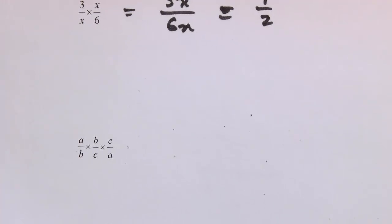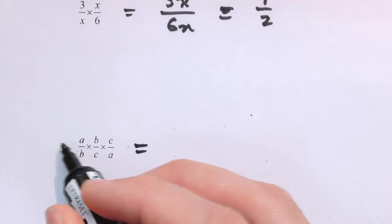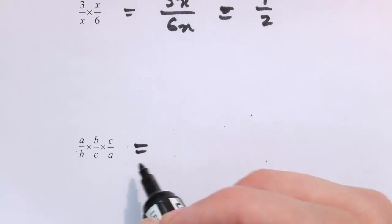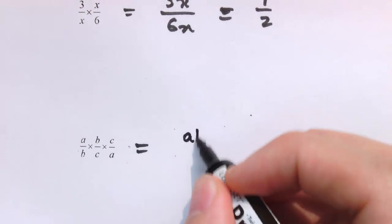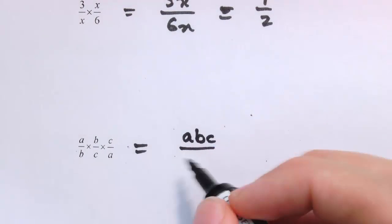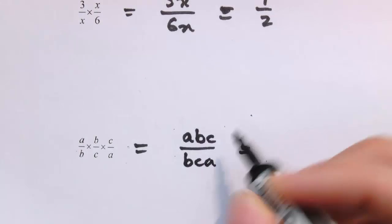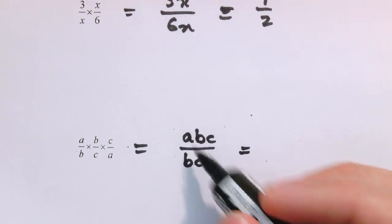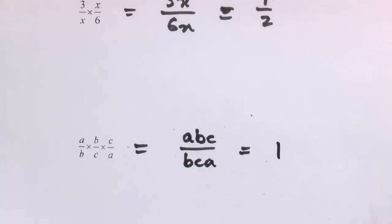It's no different with three fractions — we multiply all the numerators and all the denominators. So we end up with a·b·c on top and b·c·a on the bottom. In fact, a, b, and c all cancel top and bottom to leave just 1/1, or 1.